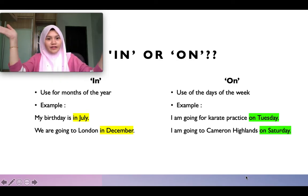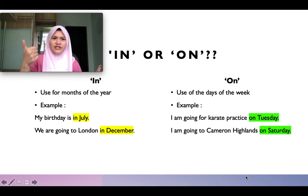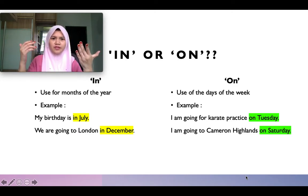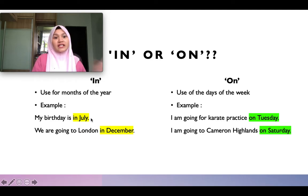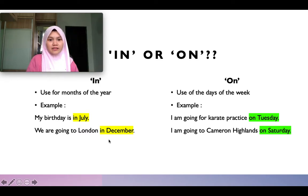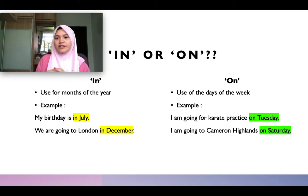For 'in', we use 'in' for the months of the year: January, February, March, April, May, June, July, August, September, October, November, and December — those are the 12 months. For example: 'My birthday is in July' — we use 'in' because July is a month. 'We are going to London in December' — December is also a month, so we use 'in'.